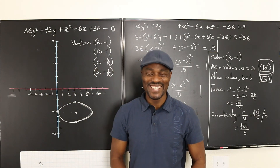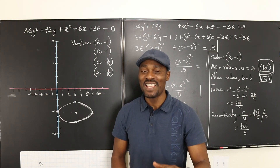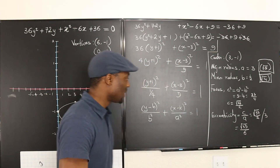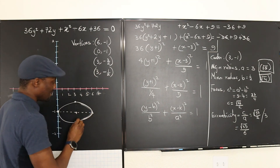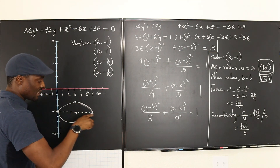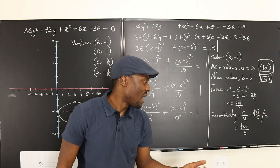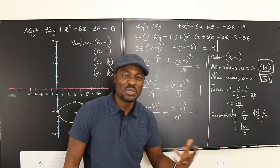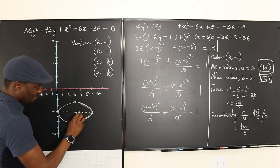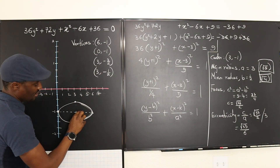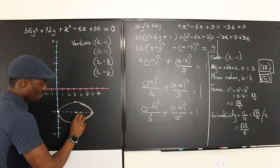If you learned anything in this video, make sure you give it a thumbs up and a share. Just one last thing: the focus is always found on the major axis, and this is the major axis. So the focus has to be somewhere here. The distance is square root of 33 over 2 — divided by 6 that's approximately 0.8 or 0.9. So the focus will be some distance like that along the major axis. We can call this point C.